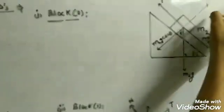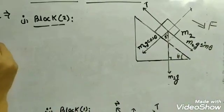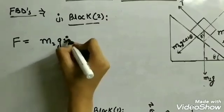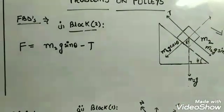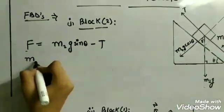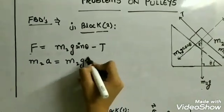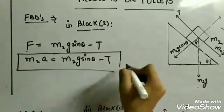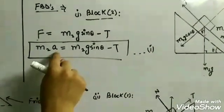We take the axis along the plane. The net force acting downwards along this axis gives us the equation: m2a = m2g sin theta minus T. This is our first equation. In this equation we can see there are two unknowns: a and T, so we will require a second equation.